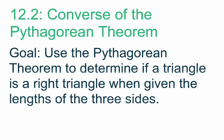If the equation ends up being true, then it is a right triangle. If it is not true, then it is not a right triangle. So let's go ahead and take a look at some examples.